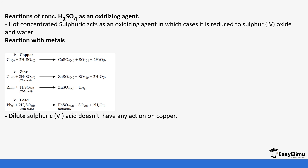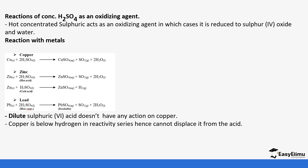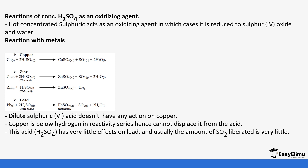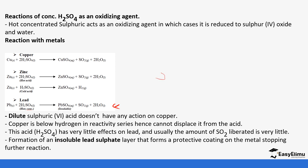Dilute sulfuric acid has no action on copper because copper is low in the reactivity series and cannot displace hydrogen. In the concentrated form it is possible due to the high oxidizing property. When the acid reacts with lead, only a small amount of SO₂ is given off because an insoluble salt — lead(II) sulfate — is formed, which coats the lead and stops the reaction from continuing.